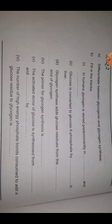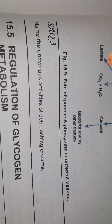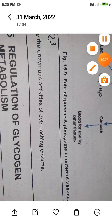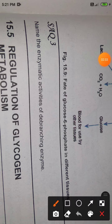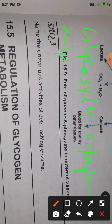The third question is: name the enzymatic activities of the debranching enzyme. The first enzymatic activity is glycogen-4:4-transferase. The second is amylo-alpha-1,6-glucosidase.